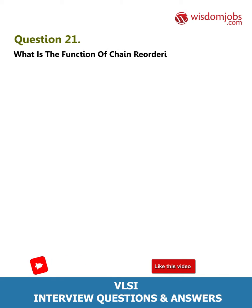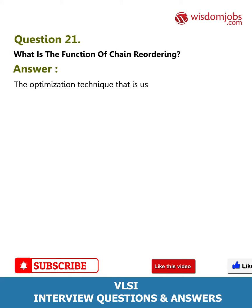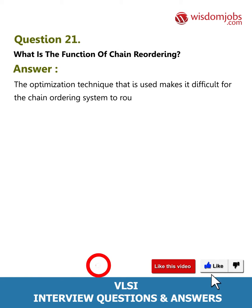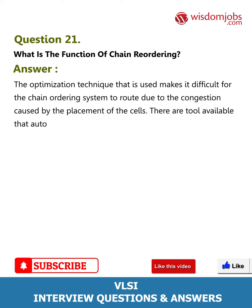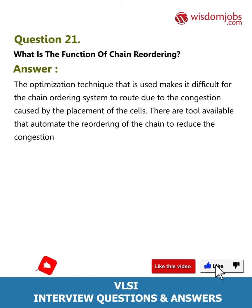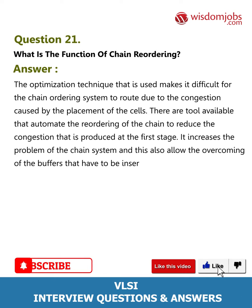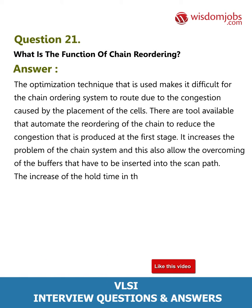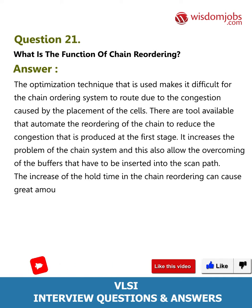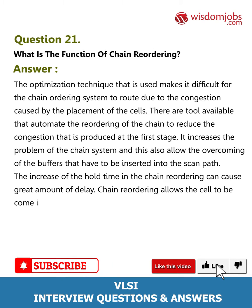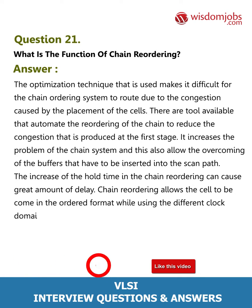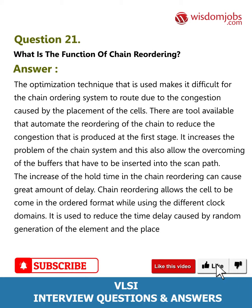Question 21: What is the function of chain reordering? The optimization technique used makes it difficult for the chain ordering system to route due to congestion caused by the placement of cells. Tools are available that automate the reordering of the chain to reduce the congestion at the first stage. It also allows overcoming of buffers that have to be inserted into the scan path. The increase in hold time in chain reordering can cause a great amount of delay. Chain reordering allows cells to become ordered while using different clock domains, reducing time delay caused by random placement of elements.